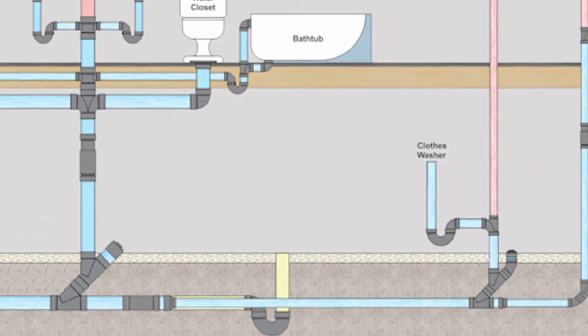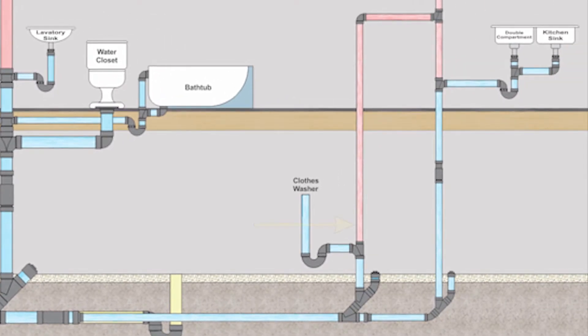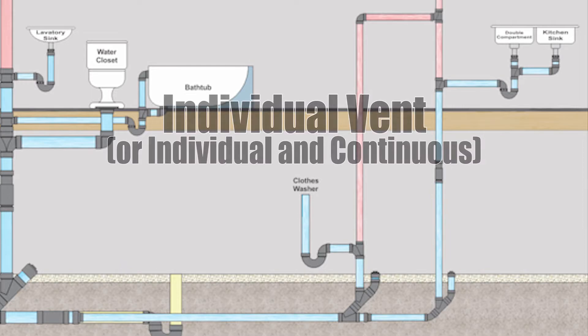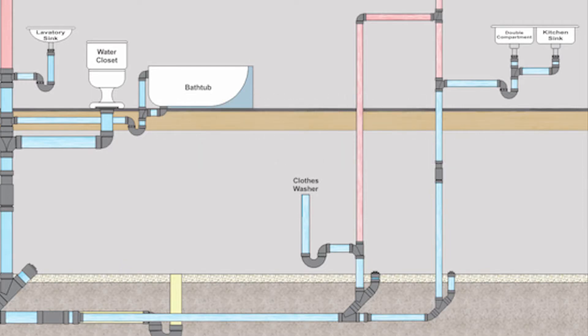So all we have left is a few vents. So let's start with the clothes washer. That was a clothes washer all by itself with its own vent. Therefore that vent is called an individual vent. Now the individual vent is really simple to size. So let's look at some code clauses around that.